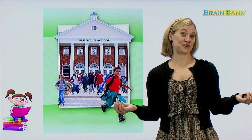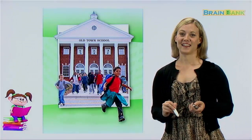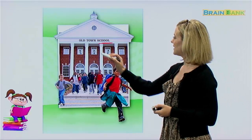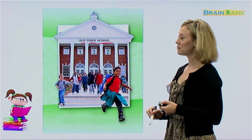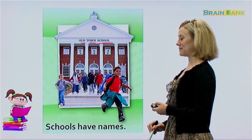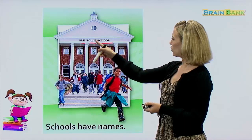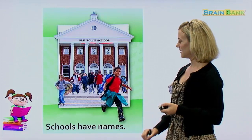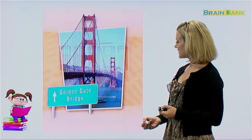Everyone should be very familiar with this picture. What do we see here? Yes, we see a school. This is a school — there are many students coming out of the school. And in this case, this is the Old Town School. That is the name of the school. So schools have names. Your school probably has a name too — is your school called Old Town School, or does it have a different name? It probably has a different name. Let's read it all together: schools have names.